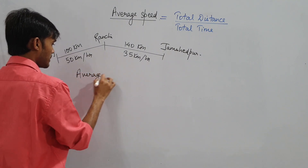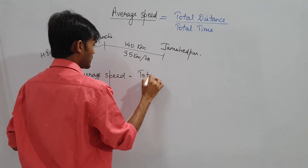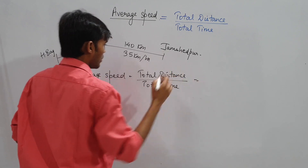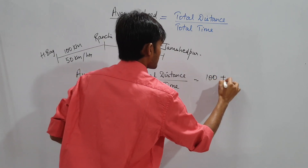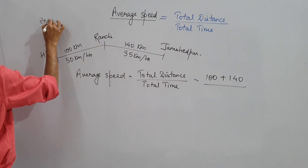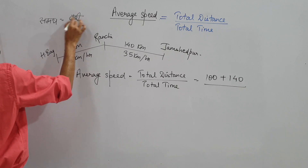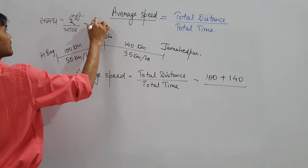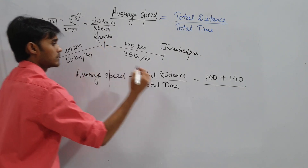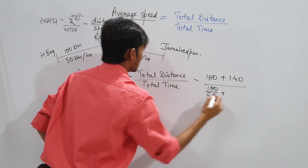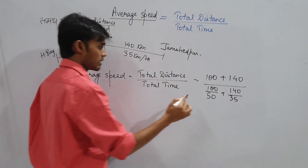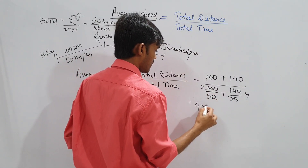We know average speed equals total distance upon total time. Total distance is visible, but unfortunately total time is not given directly — speed is given. But we know time equals distance divided by speed. Time from here to here: 100 by 50. Time from here to here: 140 by 35. That gives 2 and 4 respectively. Answer: 40 km per hour.